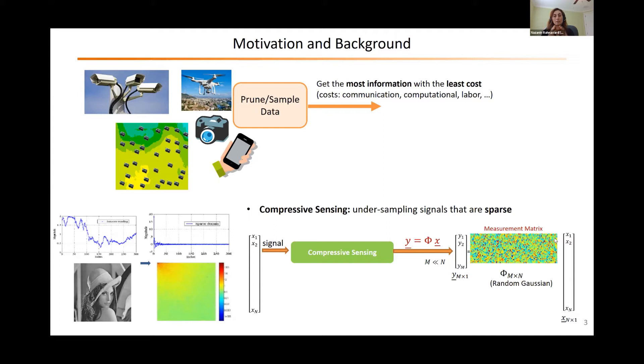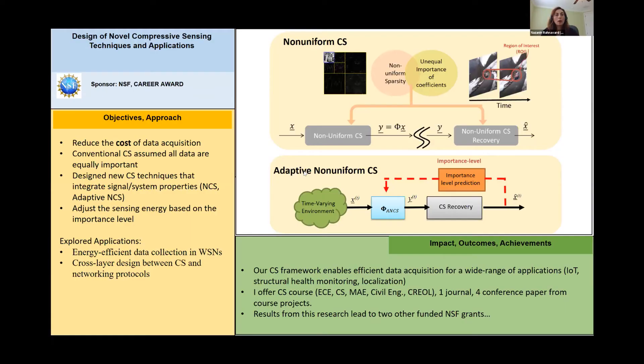And most importantly, or interestingly, this matrix can be even a random matrix, meaning that if I just collectively randomly add the data together, they are going to be very good data for us, and we can reduce the number of required data. So this is about compressive sensing.